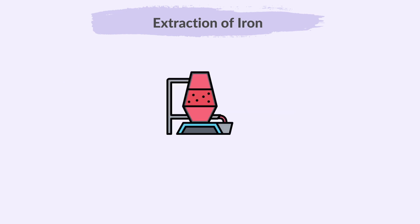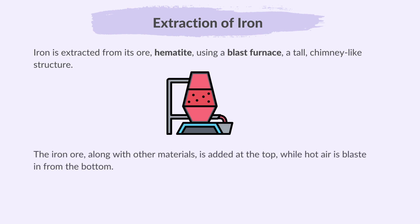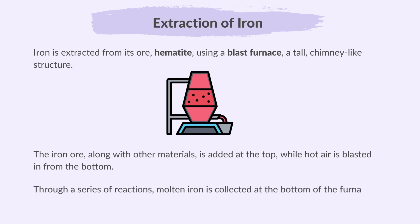Moving on, we'll discuss extraction of iron from hematite. Iron is extracted from its ore, hematite, using a blast furnace, which is a tall, chimney-like structure. The iron ore, along with other materials, is added at the top, while hot air is blasted in from the bottom. Through a series of reactions, molten iron is collected at the bottom of the furnace.